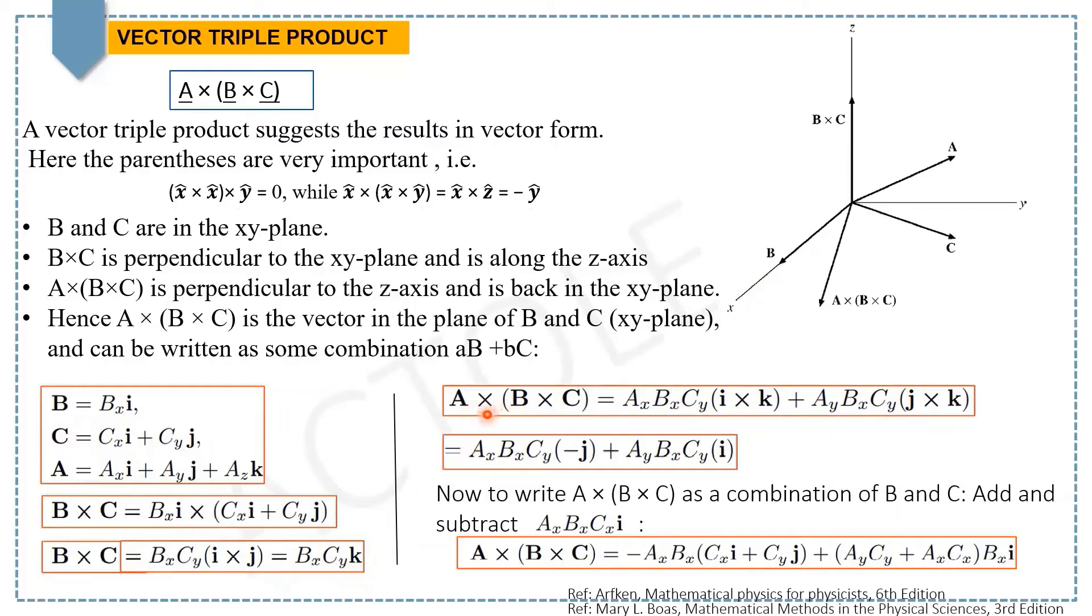Now when you take A × (B × C), you get this expression. We have i × k = -j and j × k = i, so we replace i × k by -j and j × k by i.